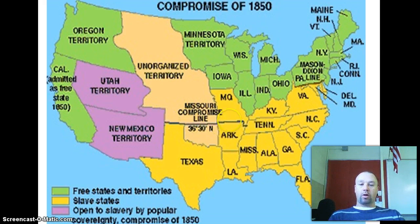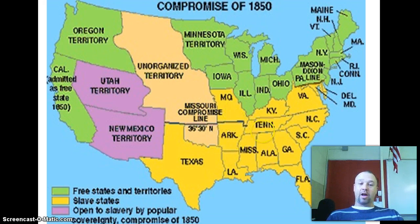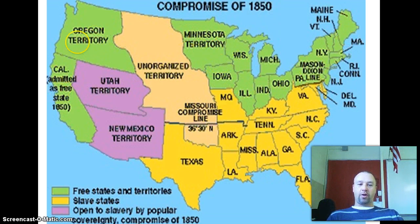All of these states — I'm going to go with yellow, maybe I'm right — these are the southern states that allowed slavery. These states up here, I think it's green, are your free states. And everything else shown here, these are not states quite yet.